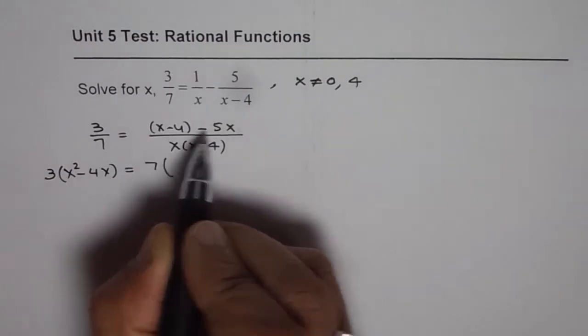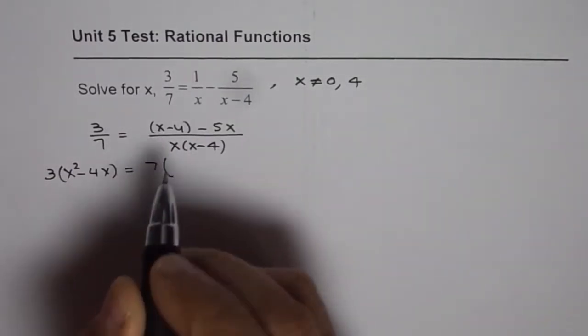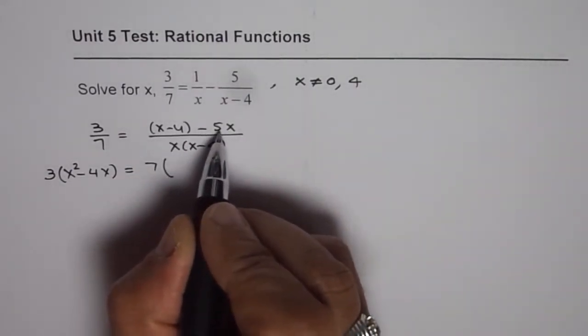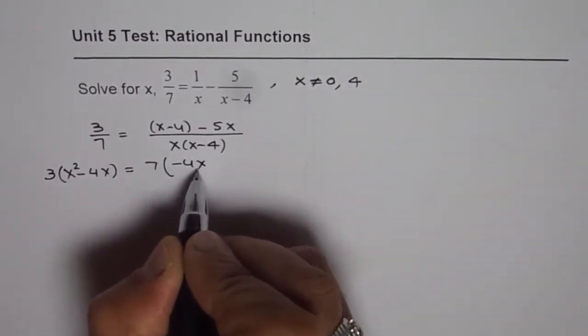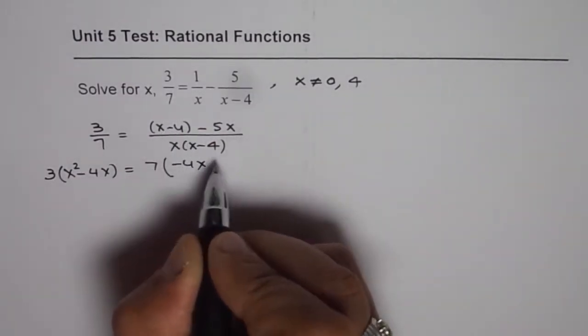Let us simplify this. x minus 5x is minus 4x, and we have minus 4.